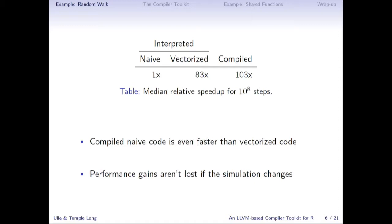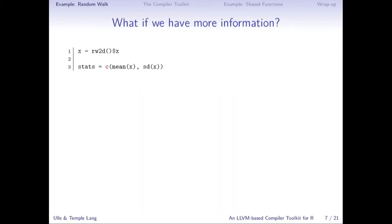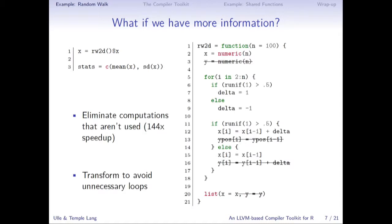If we're compiling the naive version, we don't lose performance gains if the simulation changes, and we've written fairly intuitive code without needing special R idioms. There's a little more we can do with a compiler. If we know we're only going to use the X positions and do some simple statistics on them, we can edit the code at compile time — ahead of time before the simulation runs. We can eliminate all computations unrelated to the information we'll use. In this case, we eliminate all Y computations. If the compiler does that automatically by analyzing which variables are used, we can increase our speedup to 144 times.